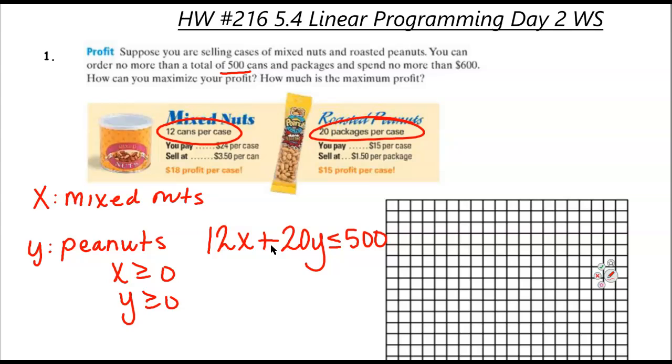That is not the only restraint. I don't have all the money in the world. I only have $600. So when I go to buy a case, this is how much I pay for my mixed nuts. So it's going to be 24X plus 15Y, and that cannot be over $600.